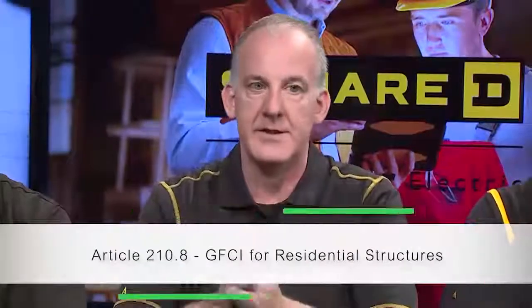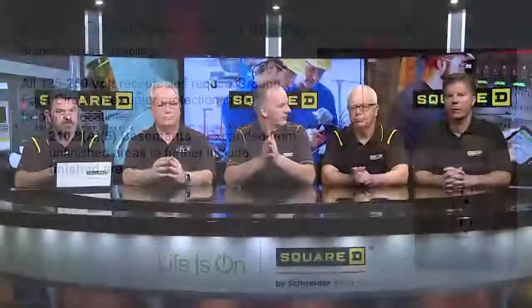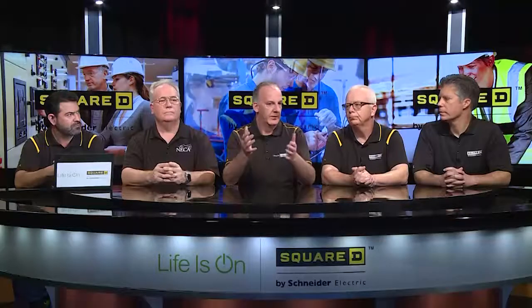We have a number of changes in 210.8 that relate to the residential structure. The first one really begins to expand things, because we've expanded it from 120 volts to 250 volts, and that begins to look at those receptacles in a much broader sense. We'll talk specifically about those various areas and what that hits in the home. Chad, maybe you can start this off with regard to what's going on in basements.